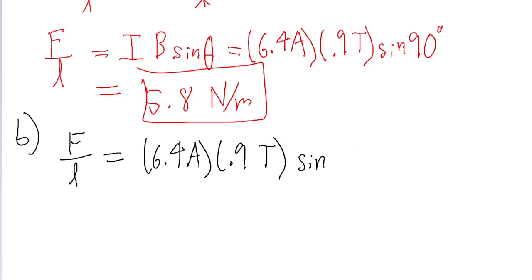And now the part that we change is the sine, because now it's the sine of 35 degrees. If we put that into a calculator, then we find a force per unit of length of 3.3 newtons per meter. And so that is our answer to part B.